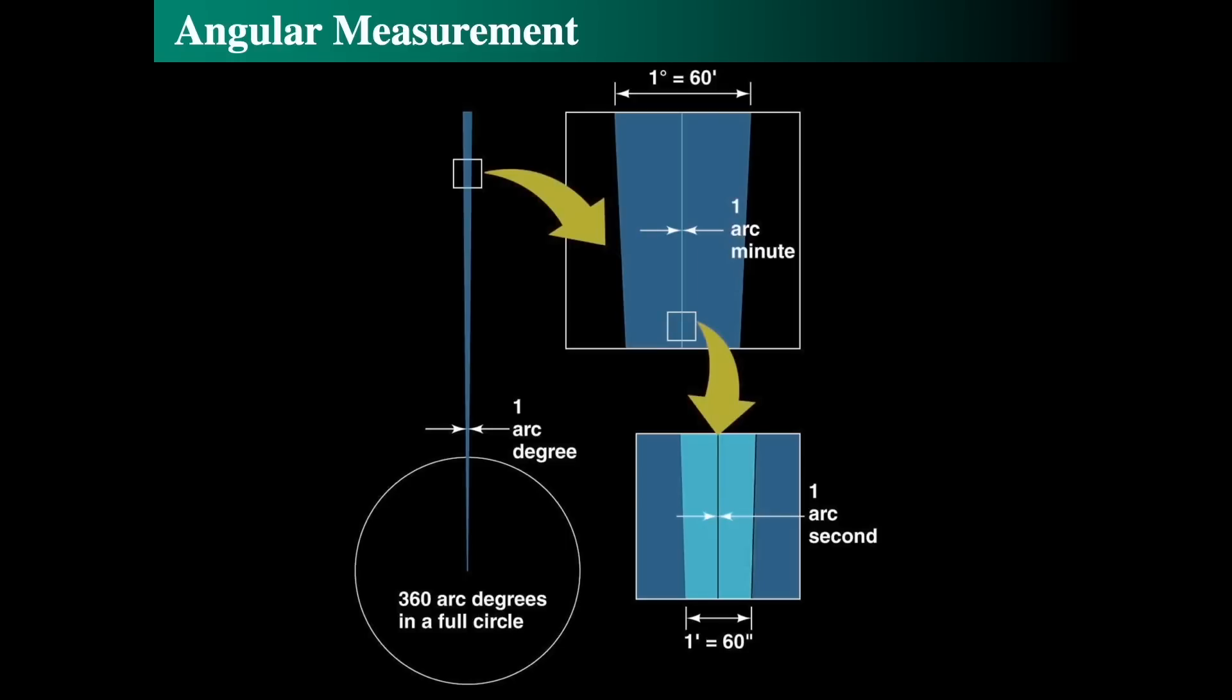Imagine that you took your pinky held at arm's length, and marked 60 little tick marks from the left side to the right side across your pinky nail. Those 60 evenly made markings across your pinky each would be one arc minute. So there are 60 arc minutes in a degree, and that's a very tiny angular measurement.